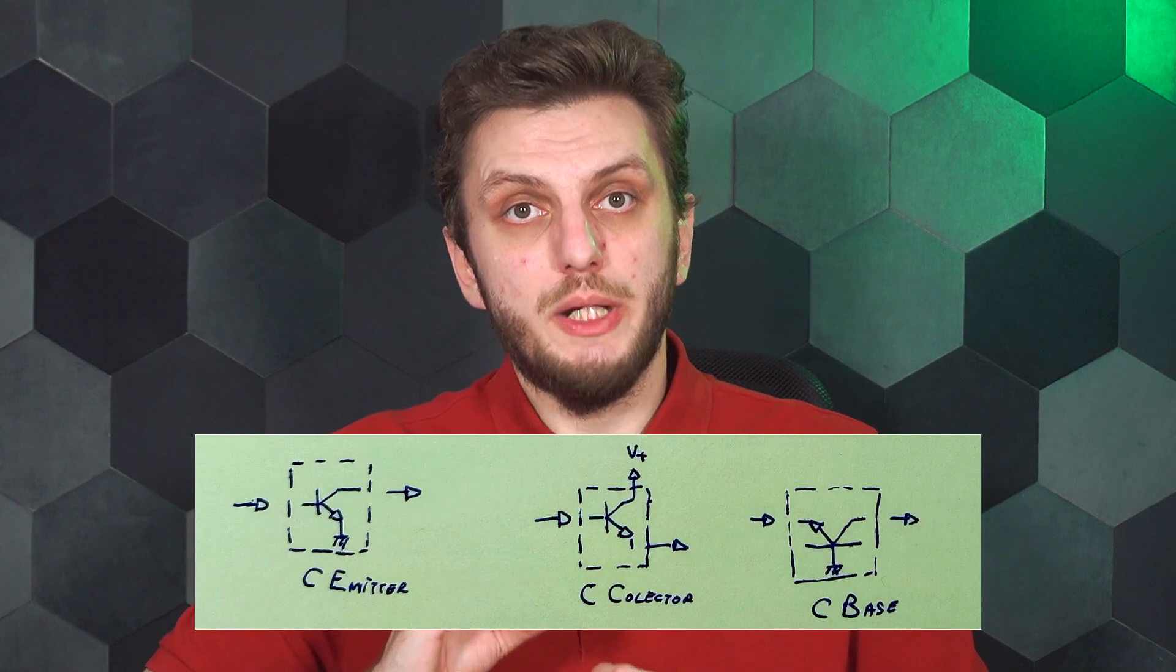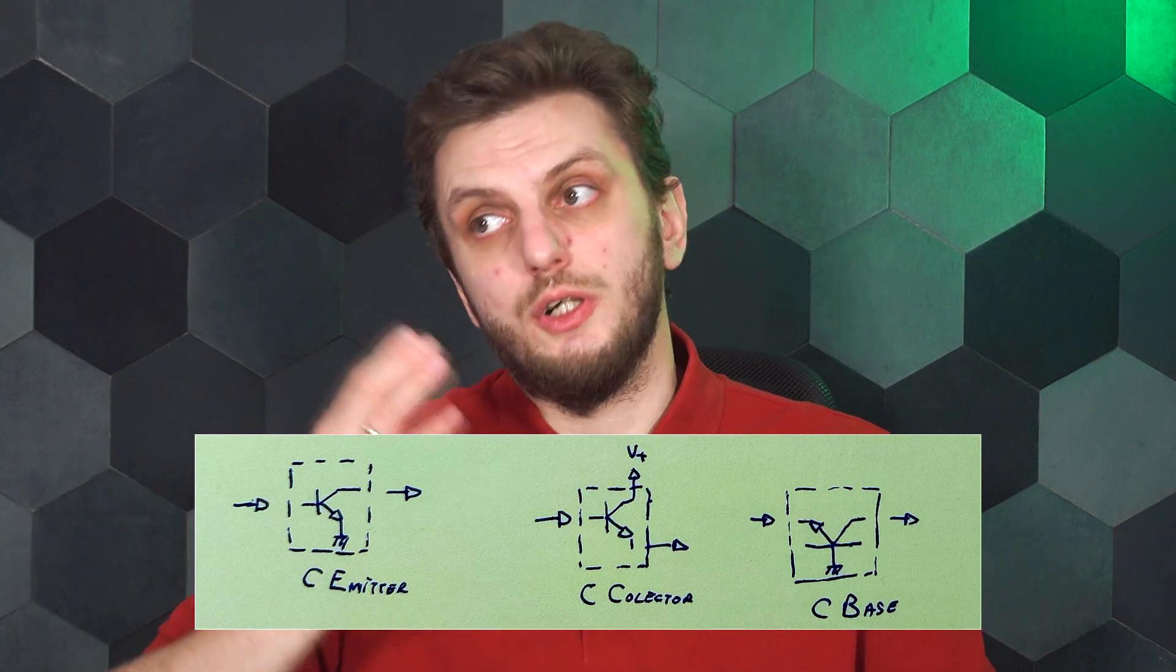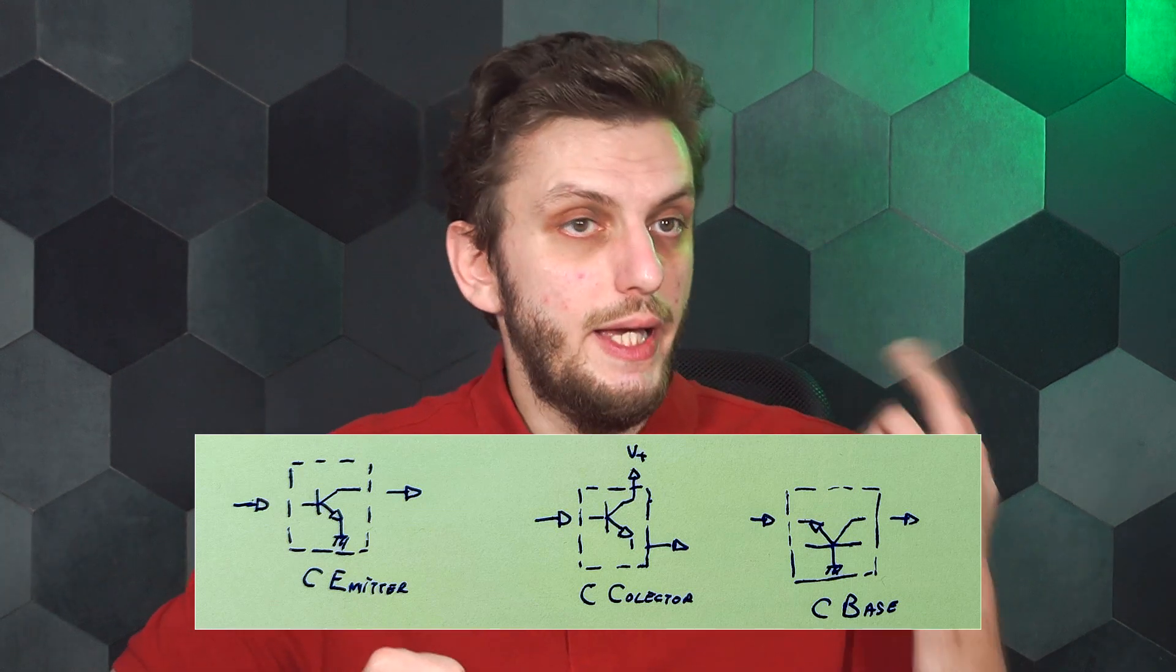In general, the transistor has three pins and you need two pins to input the signal and another two pins to output it. So one of the pins ends up being used for both purposes. Based on which pin is common, for a bipolar transistor you get your common emitter, common collector, and common base configurations, each with their own special properties.